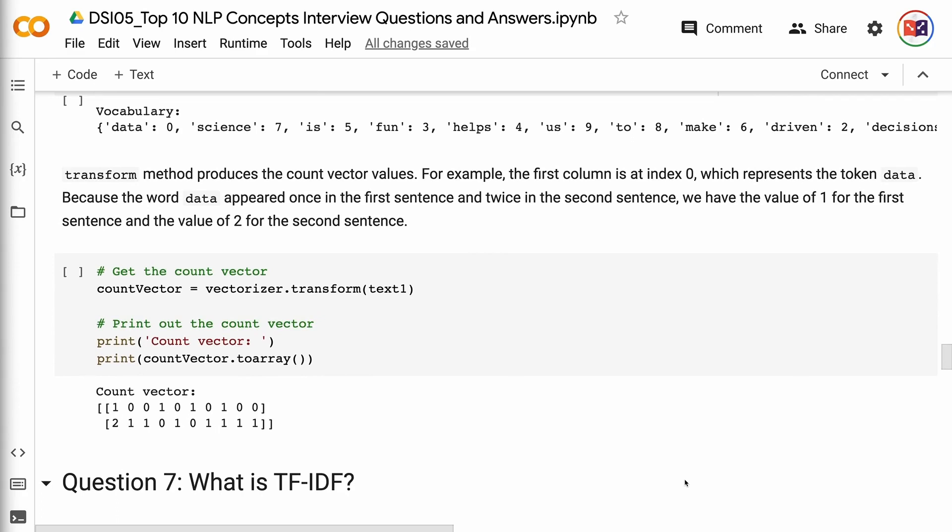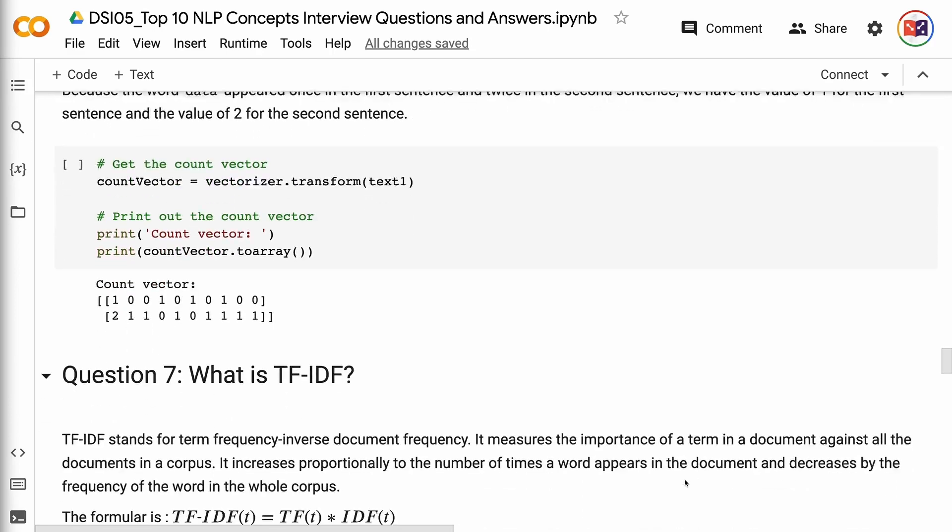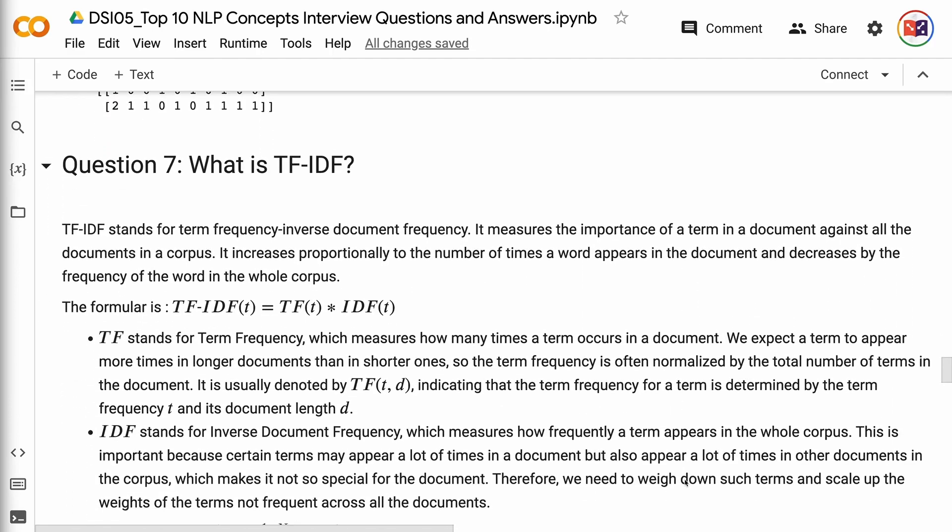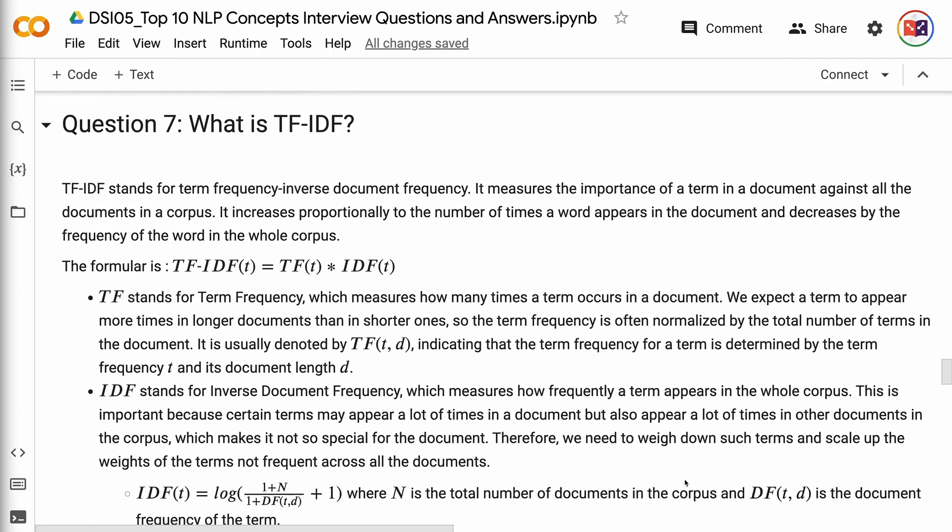Question 7: What is TF-IDF? TF-IDF stands for term frequency inverse document frequency. It measures the importance of a term in a document against all the documents in a corpus. It increases proportionally to the number of times a word appears in the document and decreases by the frequency of the word in the whole corpus. The formula is TF-IDF equals TF times IDF.